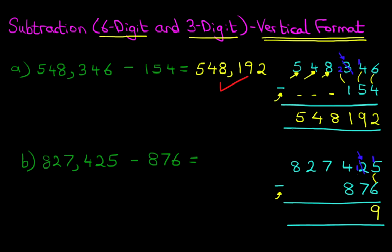On to the tens, we have 1 minus 7. Again, 1 is smaller than 7, so we are going to take 1 from the digit on the left, which is a 4. Let's cross out the 4. 4 minus 1 is 3, and the 1 we have taken from here we are going to add to the column on the right. The tens is now 11 minus 7. 11 minus 7 is 4.